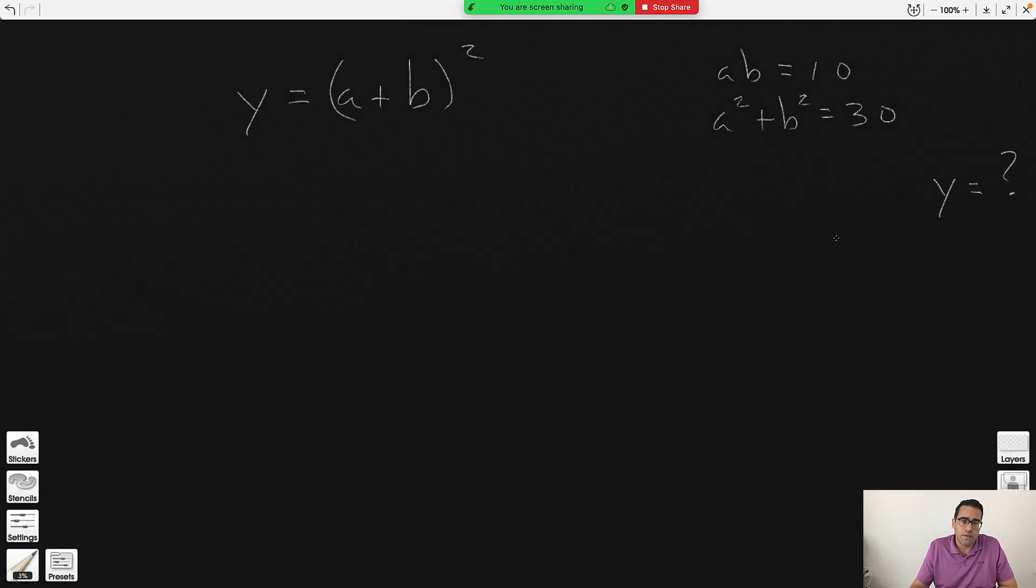Okay, so step one: we know that exponent 2 means that you multiply by itself two times, so we're going to rewrite it as (a + b) times (a + b). Now we're going to apply the distributive property.